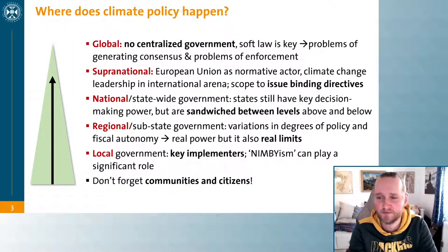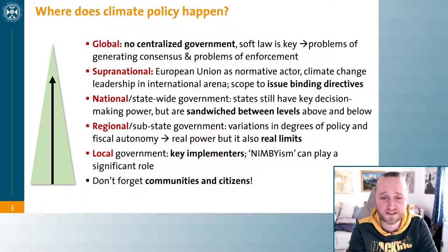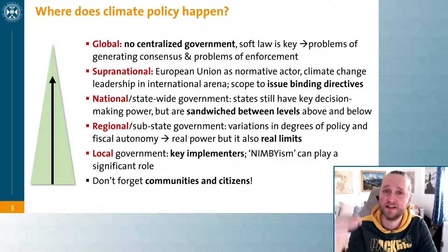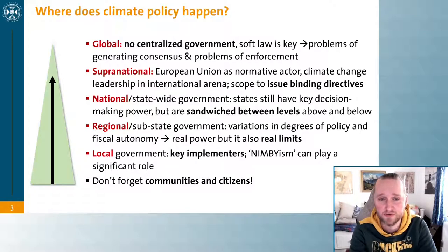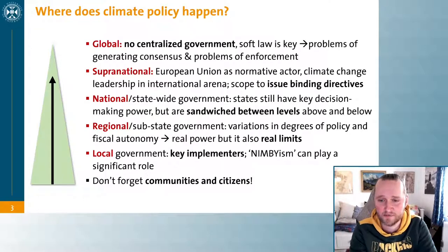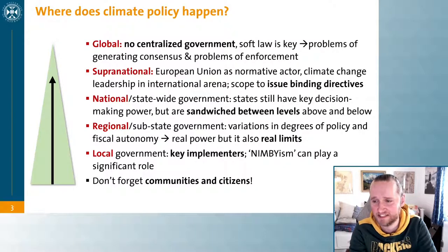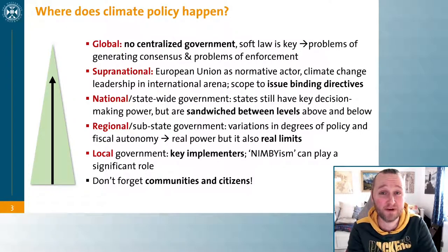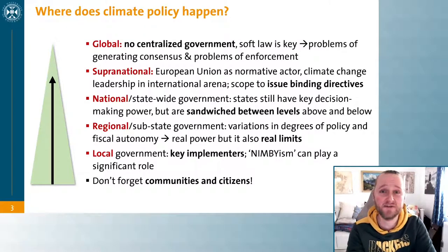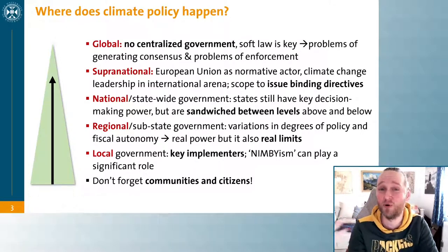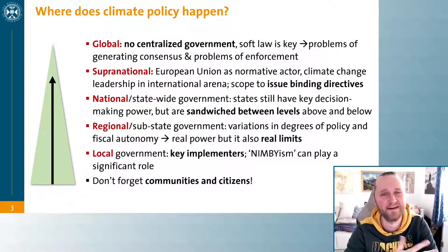Below the supranational level is the national level, which in the majority of the world is still the main decision-making power. But national governments are sandwiched between levels above and below them, because below the national level is the regional level. Sub-state governments can play quite a large role in policymaking against climate change. California, for example, pledged to meet the Paris Agreement standards despite the US as a whole wanting to drop out of the agreement.